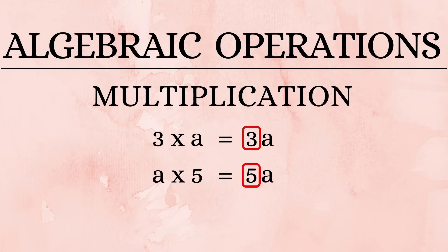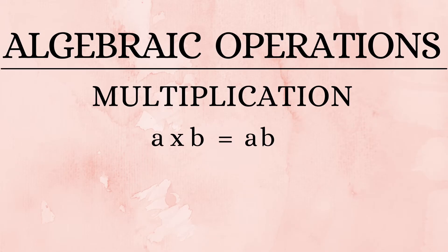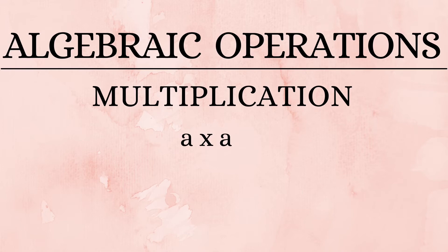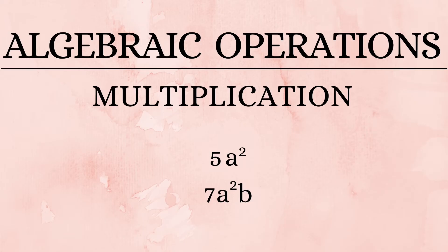The number that appears before the variable in a product is called the coefficient. For multiplication of two variables, 'a into b' is written as 'ab,' and 'b into a' is also written as 'ab' — always in alphabetical order. When we multiply similar variables, 'a into a' is written as 'a squared,' and 'a into a into b' is written as 'a squared b.' These products can also have coefficients, like '5a squared' or '7a squared b.'